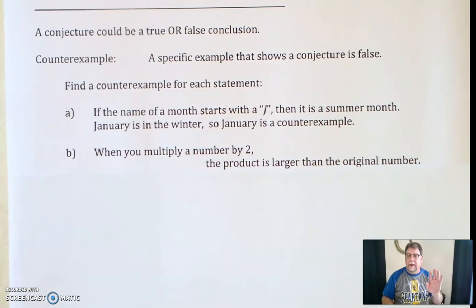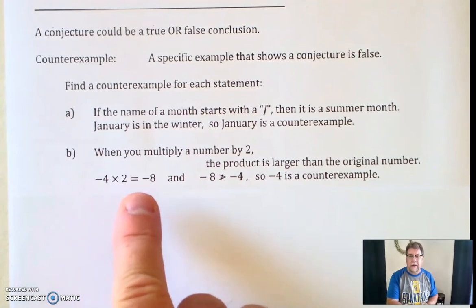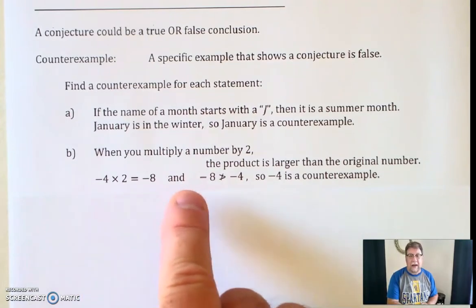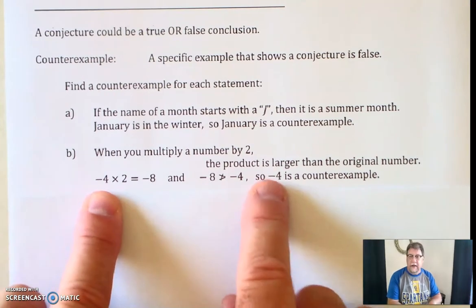But there is a counterexample. There's many counterexamples. And you just need to find one. What about negative numbers? Negative 4 times 2 is negative 8. And negative 8 is not larger than negative 4. So, therefore, negative 4, this number here, is a counterexample.